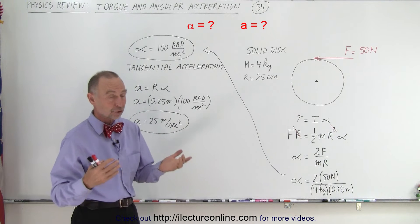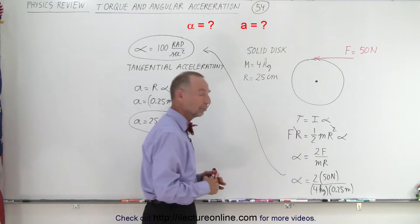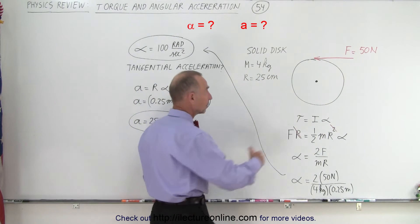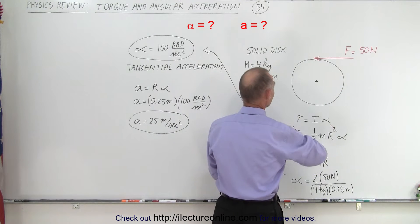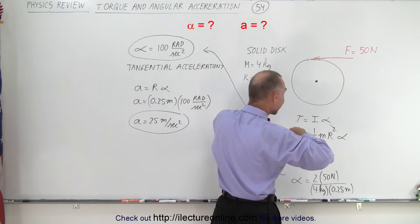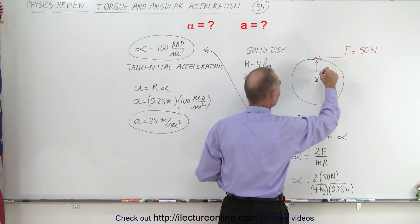It therefore causes a torque, and the torque will equal the moment of inertia times the angular acceleration. So the torque is the force times the perpendicular distance. The distance here, of course, would be the radius, and if I can take the top off, there we go. So this here is the radius of the disk.